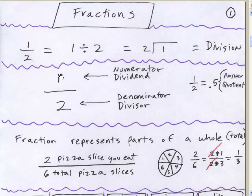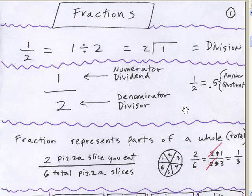The top is called the numerator or the dividend. The bottom is called the denominator or the divisor. I always call them numerator and denominator. If you divide it, 1 divided by 2 equals 0.5 — that's actually how you convert a fraction to a decimal. The answer is called the quotient. Remember, it's just division.